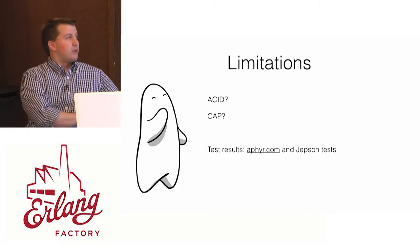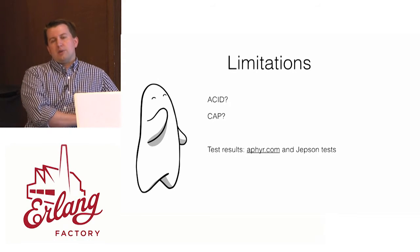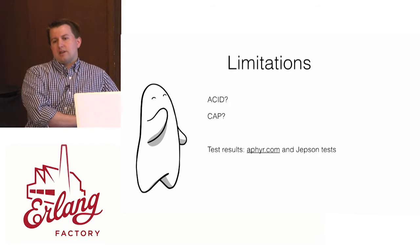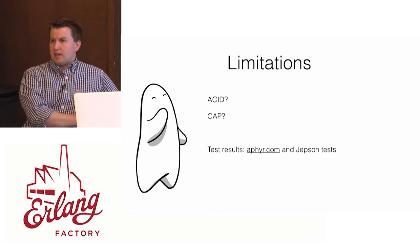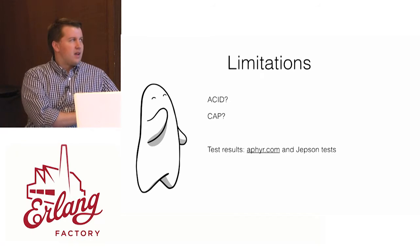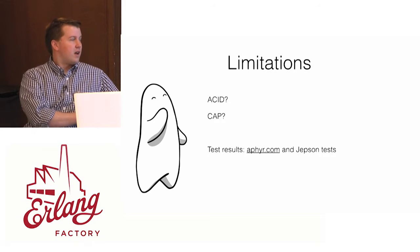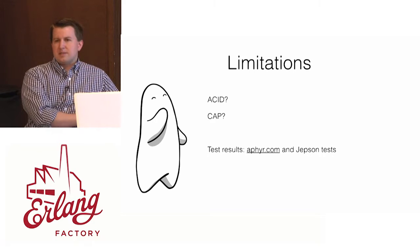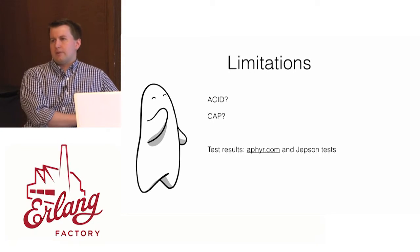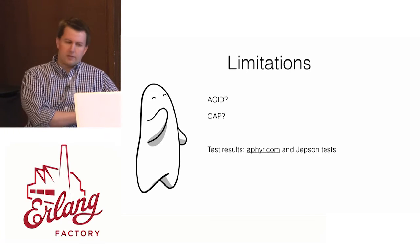ACID: like most NoSQL databases, we don't have full ACID. Atomic writes are limited to a single document — you cannot have cross-document transactions. CAP theorem: it's a CP system with automatic failover using Raft election when the master for a given shard dies, to elect a new leader for that shard.